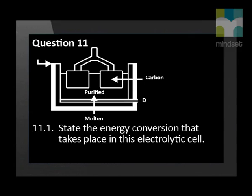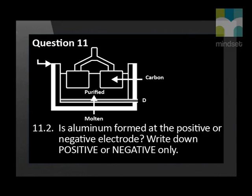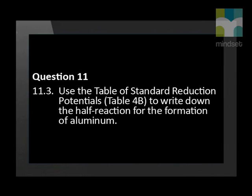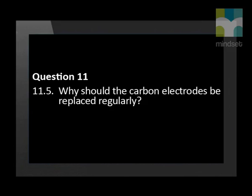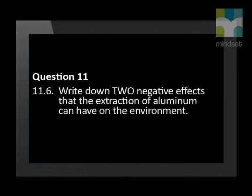State the energy conversion that takes place in this electrolytic cell. Is aluminium formed at the positive or negative electrode? Write down positive or negative only. Use the table of standard reduction potentials (table 4b) to write down the half reaction for the formation of aluminium. Explain why carbon dioxide gas is formed at one of the electrodes. Why should the carbon electrodes be replaced regularly? Write down two negative effects that the extraction of aluminium can have on the environment.